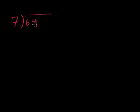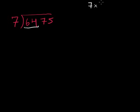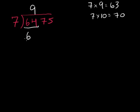Let's do a few more problems. Let's say we had 7 going into 6,475. 7 goes into 6, 0 times, so we keep moving forward. Then we go to 64. 7 goes into 64 how many times? 7 times 9 is 63 — that's pretty close. 7 times 10 is 70, so that's too big. So 7 goes into 64, 9 times. 9 times 7 is 63. 64 minus 63 is 1.